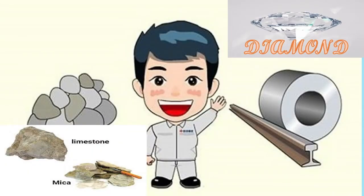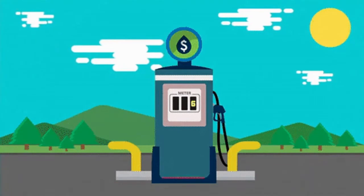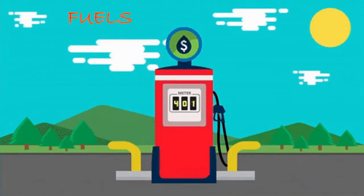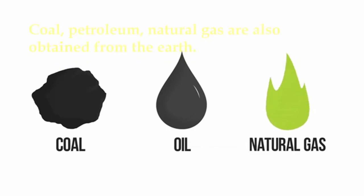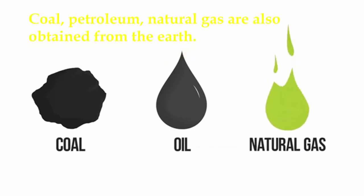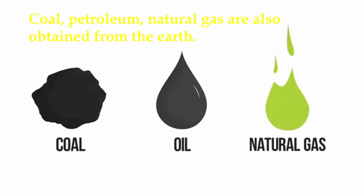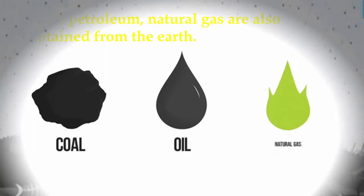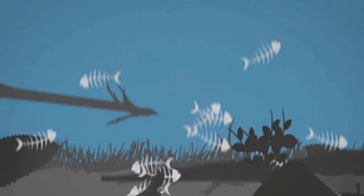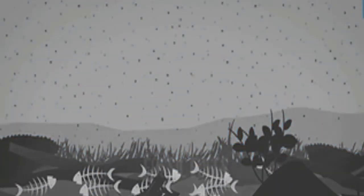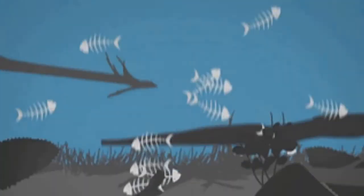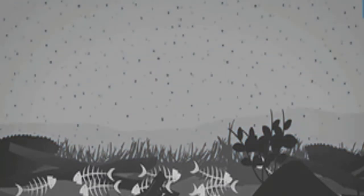Moving ahead to the next natural resource: fuels. Coal, petroleum, and natural gas are also obtained from the earth and are called fuels. Coal and petroleum are called fossil fuels, which take millions of years to form. They are formed from dead plants and animals buried under the soil millions of years ago. That is why they are called non-renewable resources — they are limited in supply, take years to form, and can get exhausted by human use.